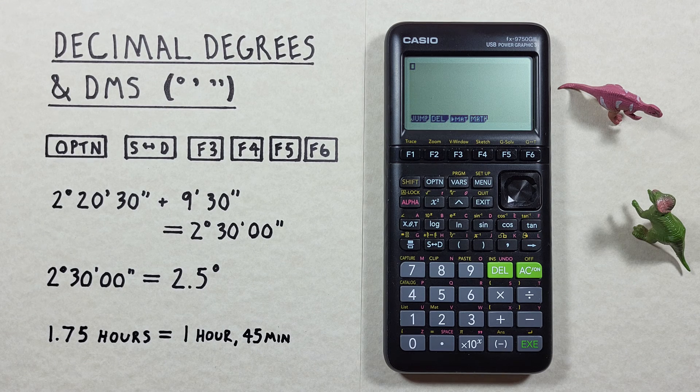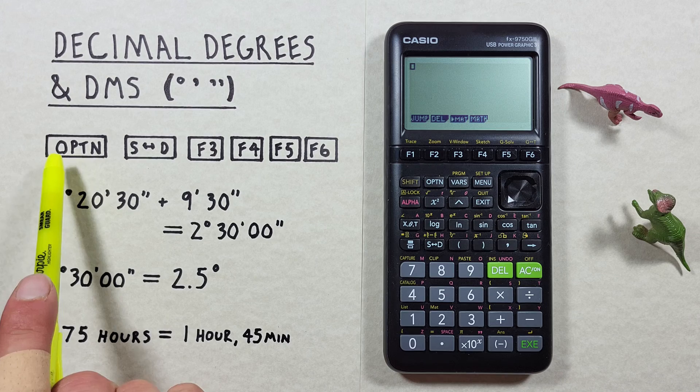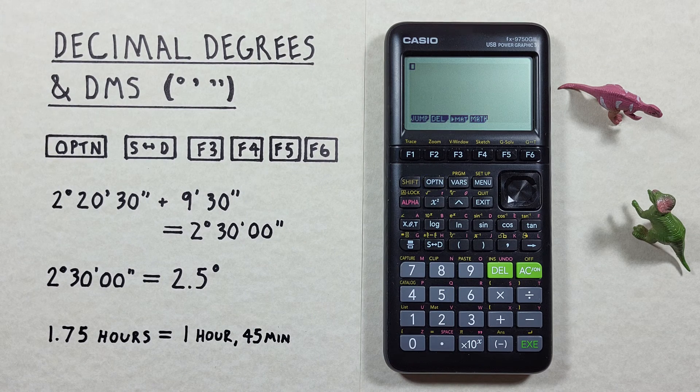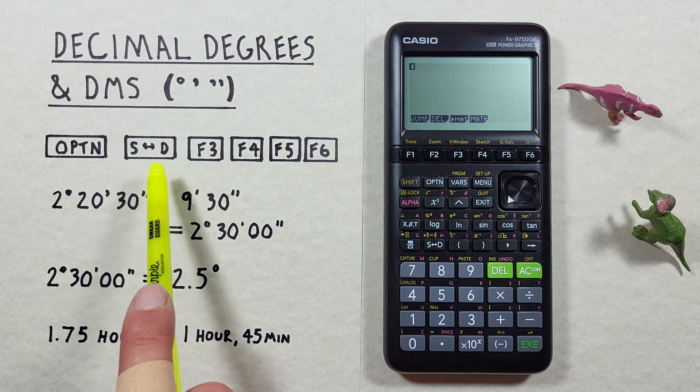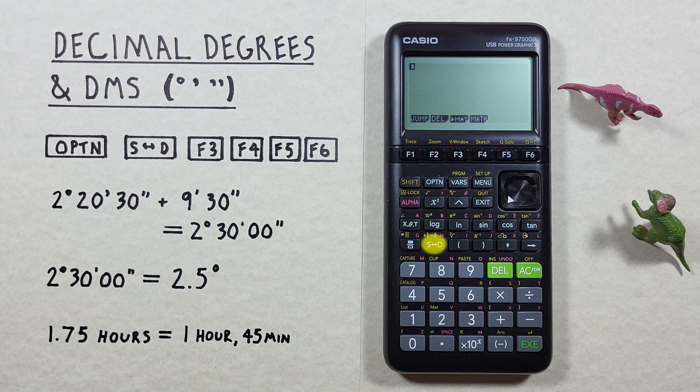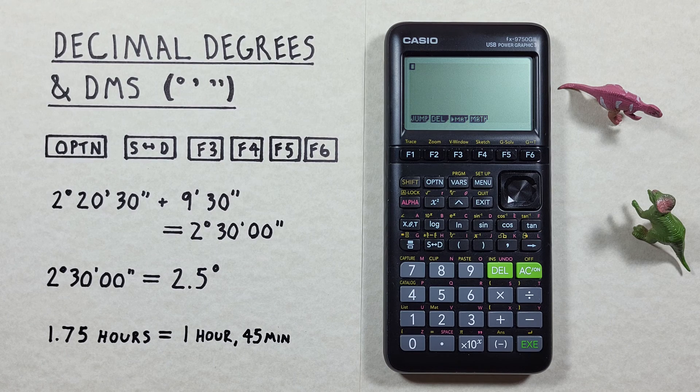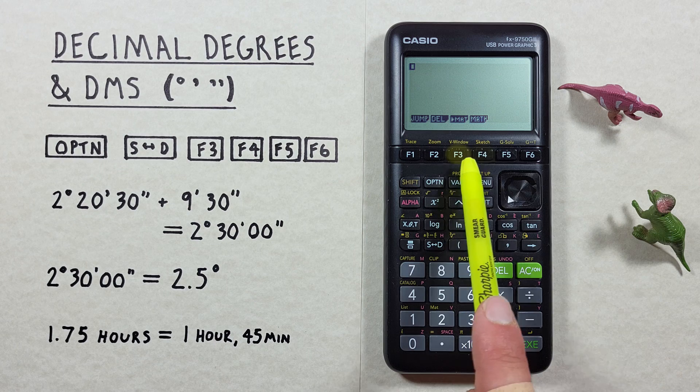To do that we'll use the option key that looks like this located here, the S to D conversion key that looks like this located here, and the F3, F4, and F5 keys that look like this located here.